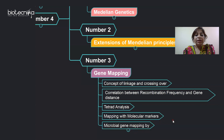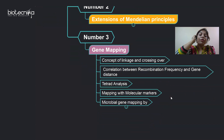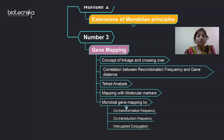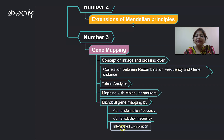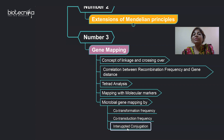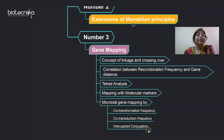There is also microbial gene mapping. Nowadays in the CSIR exam, questions from microbial gene mapping are coming in both Part B and Part C. You should know what transformation, transduction, and conjugation are, and how genes are mapped using co-transformation frequency, co-transduction frequency, and interrupted conjugation. One important thing: in interrupted conjugation, the unit of gene distance is not base pairs, kilobase pairs, recombination frequency, or centimorgans — it is in minutes, as the distance is a function of time.